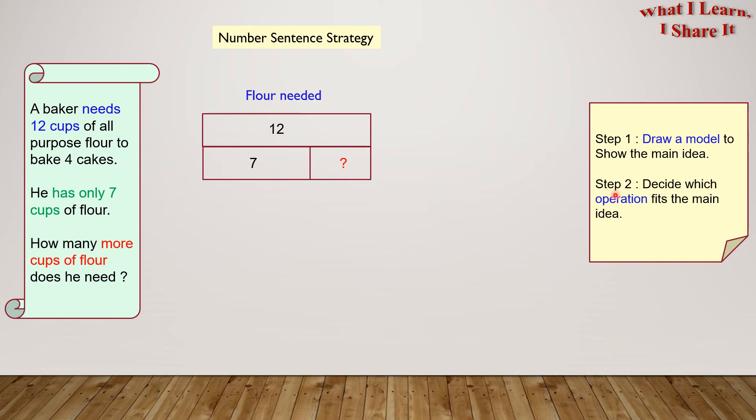Step 2. Decide which operation fits the main idea. As you can see here, 12 is the whole and 7 is a part of it. And we have to find the remaining part. This remaining part we can find by subtraction. Yes! So we will use the subtraction operation.